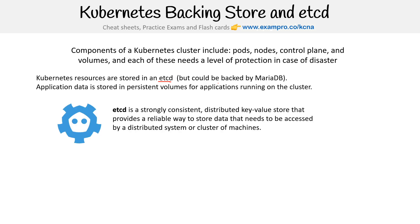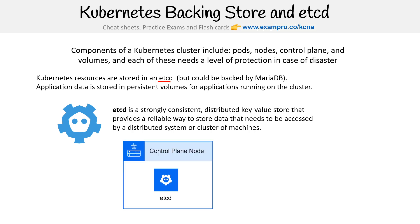etcd is a strongly consistent distributed key-value store that provides a reliable way to store data that needs to be accessed by a distributed system or clusters of machines. etcd resides in the control plane node, and you need to know that's where it is.